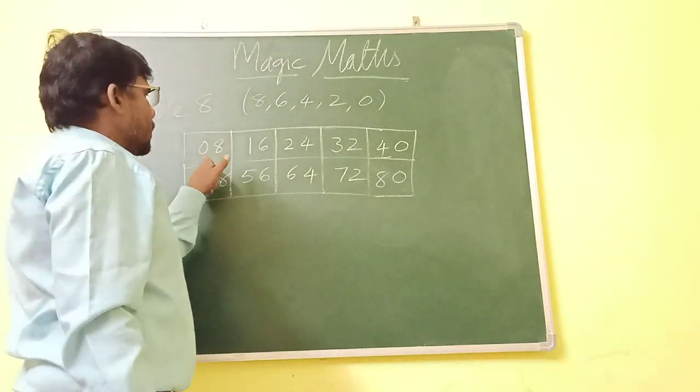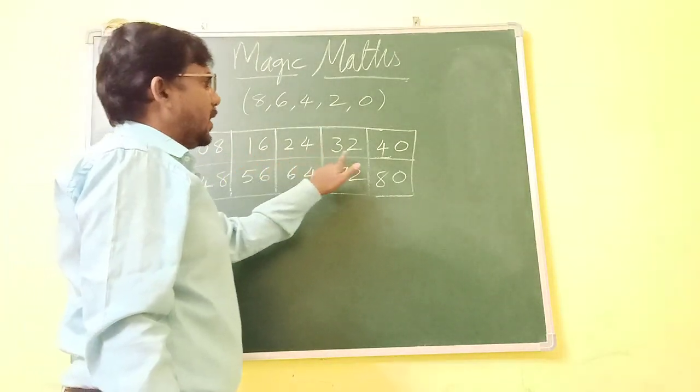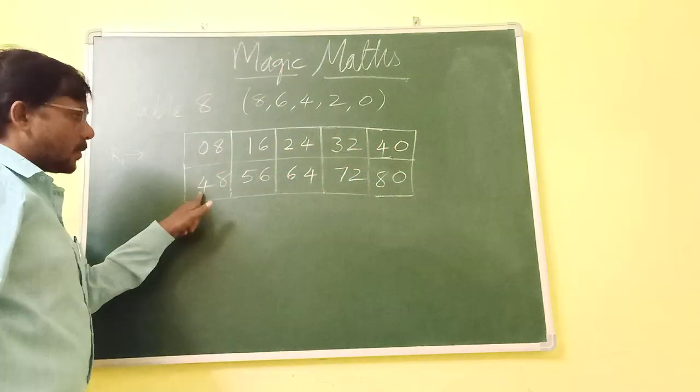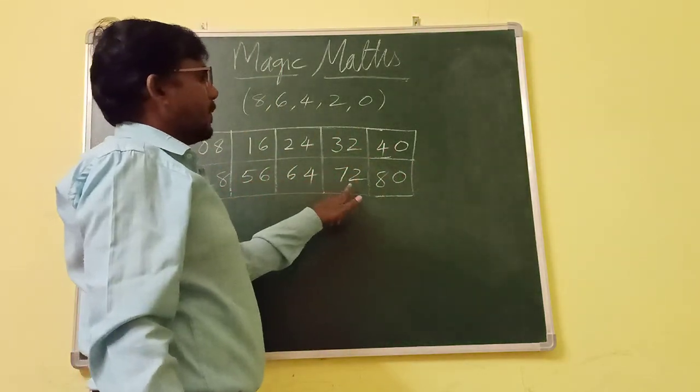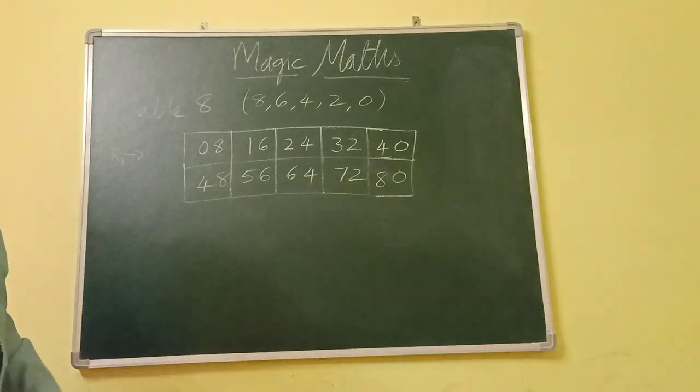Again, I repeat. In this, we need to take 0, 1, 2, 3, 4. Again, the 4 is repeated here. 4, 5, 6, 7, 8. Now, I think your table 8 is finished. Check it.